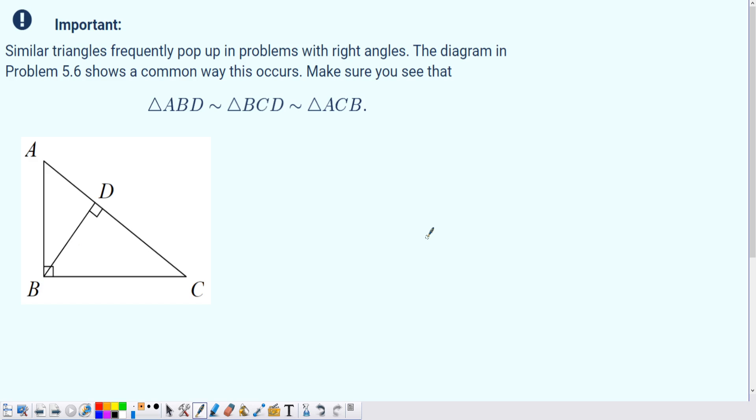Similar triangles frequently pop up in problems with right angles. The diagram in the previous problem shows a common way this occurs. Make sure we see that triangle ABD is similar to triangle BCD which is similar to triangle ACB.